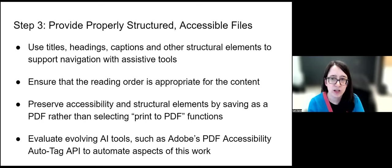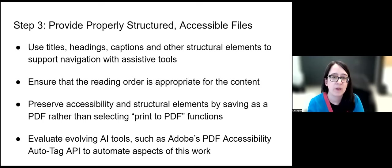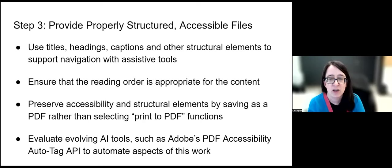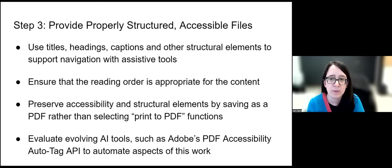Step three is to provide properly structured accessible files. Use titles, headings, captions, and other structural elements to support navigation with assistive tools. Every file should have a clear, descriptive name — not just an auto-generated name like JPEG 234. Use header tags so people can navigate through using assistive technologies as an outline, jumping from section to section rather than page by page — which is a huge problem in a large document. Make sure you have captions for any pictures, graphs, or visuals, and think about other structural elements supporting navigation, including reading order.